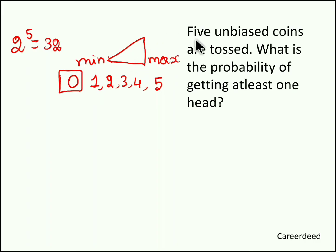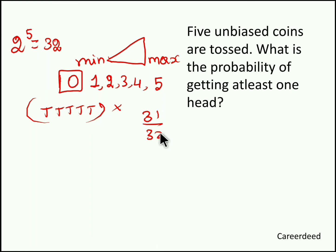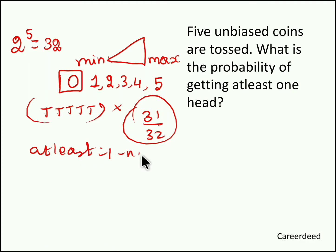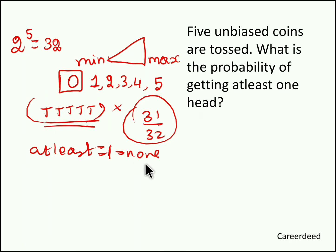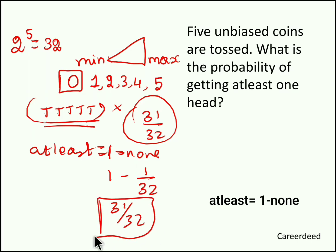Zero heads occurs only in the case of all tails, which is just 1 out of 32. Whenever you have the word 'at least', use the structure: at least means 1 minus none. Total probability is 1 (100%), and you subtract the probability of not meeting the condition. The probability of getting no heads at all is 1 by 32. So 1 minus 1 by 32 equals 31 by 32, which is the probability of getting at least one head.